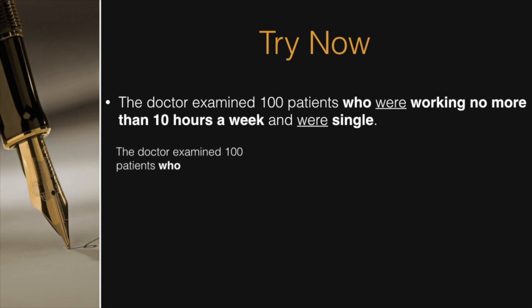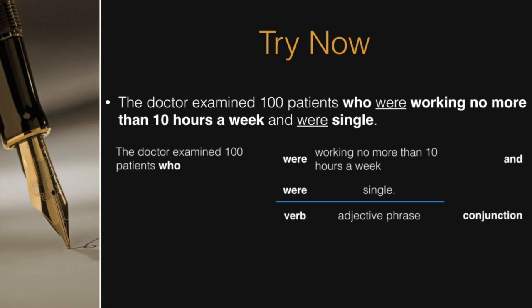After taking a start, the sentence divides into two parts. These two parts state two ideas, that is, working no more than 10 hours a week and being single. These two ideas are equally important and are written in forms which are grammatically identical. Therefore, we say that this sentence contains parallel ideas and these ideas are written in parallel forms. Moreover, the parallel ideas are separated by a conjunction and.